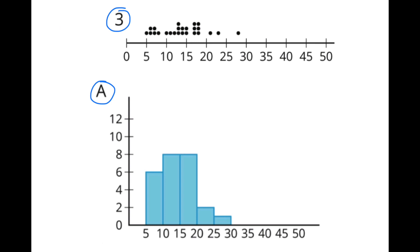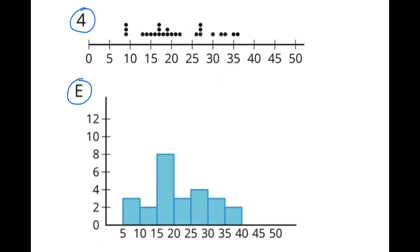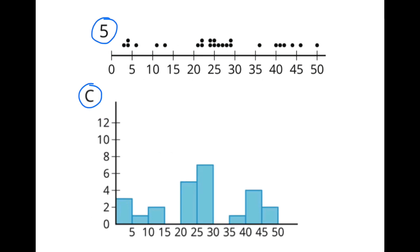Dot plot number 3 and histogram A make a matching data set. Dot plot number 4 and histogram E make a matching data set. And dot plot number 5 and histogram C make a matching data set.